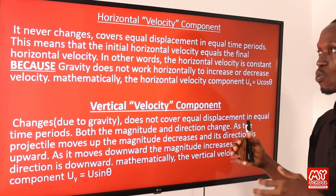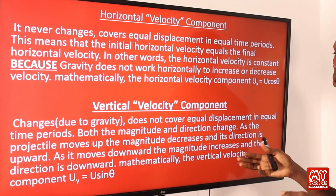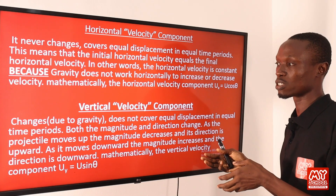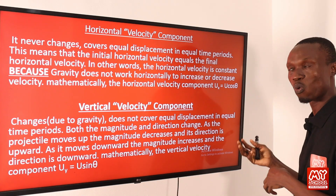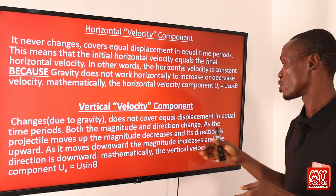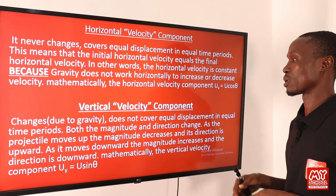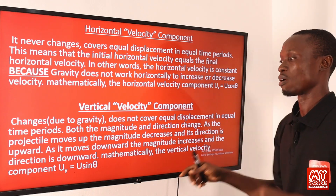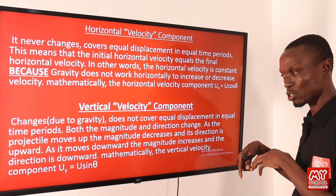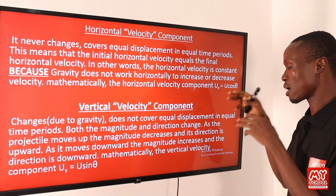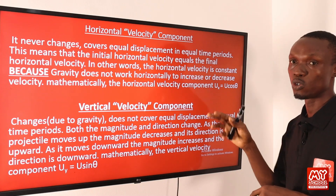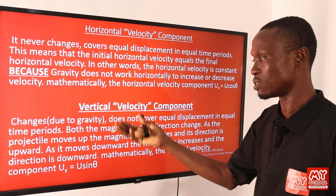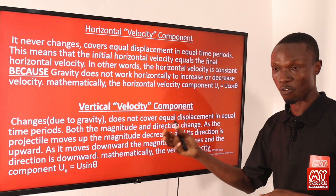The vertical velocity component is quite different from the horizontal one. The vertical velocity changes due to gravity — it is not constant and does not cover equal displacement in equal time. Both the magnitude and direction change: as the projectile moves up, the magnitude decreases and direction is upward; as it moves downward, the magnitude increases and direction is downward. Mathematically, the vertical velocity component is u_y = u sin θ.